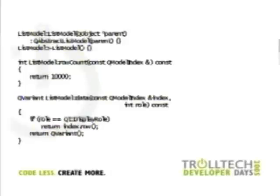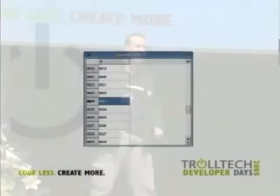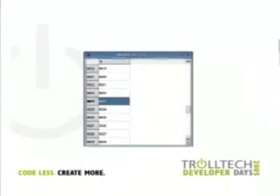An added benefit is that you don't store anything in this model — it takes up virtually no memory except for a QObject. So you have 10,000 items that take no memory at all, which is useful in many cases. And the result, when you show this model — here displayed in a table view — demonstrates an important point about how we think about data structures in the model-view architecture.